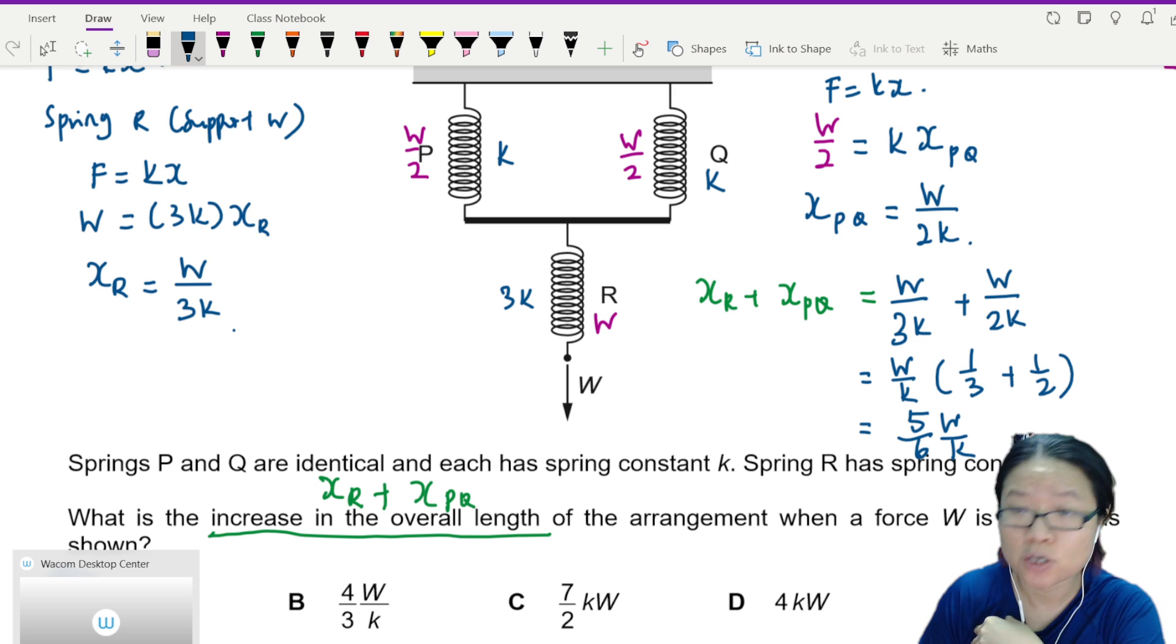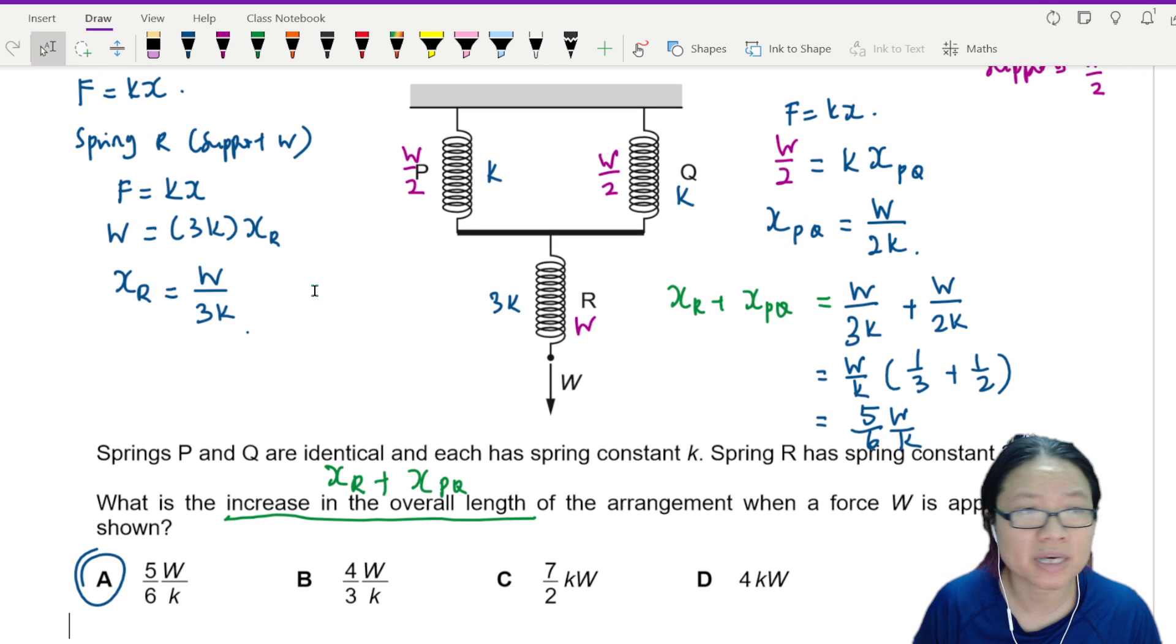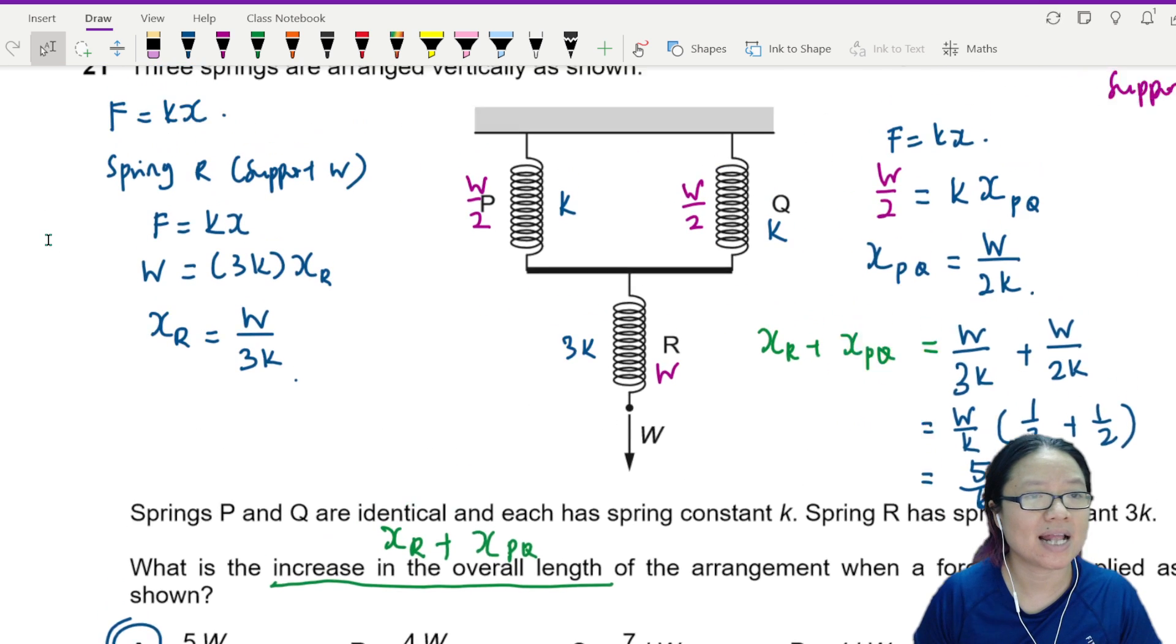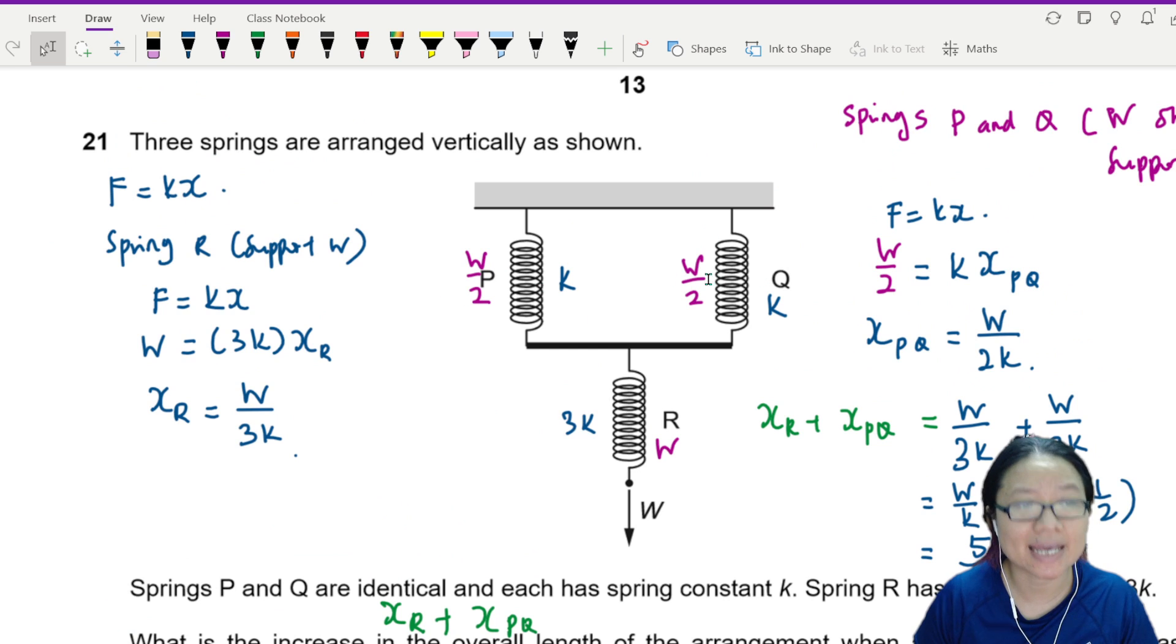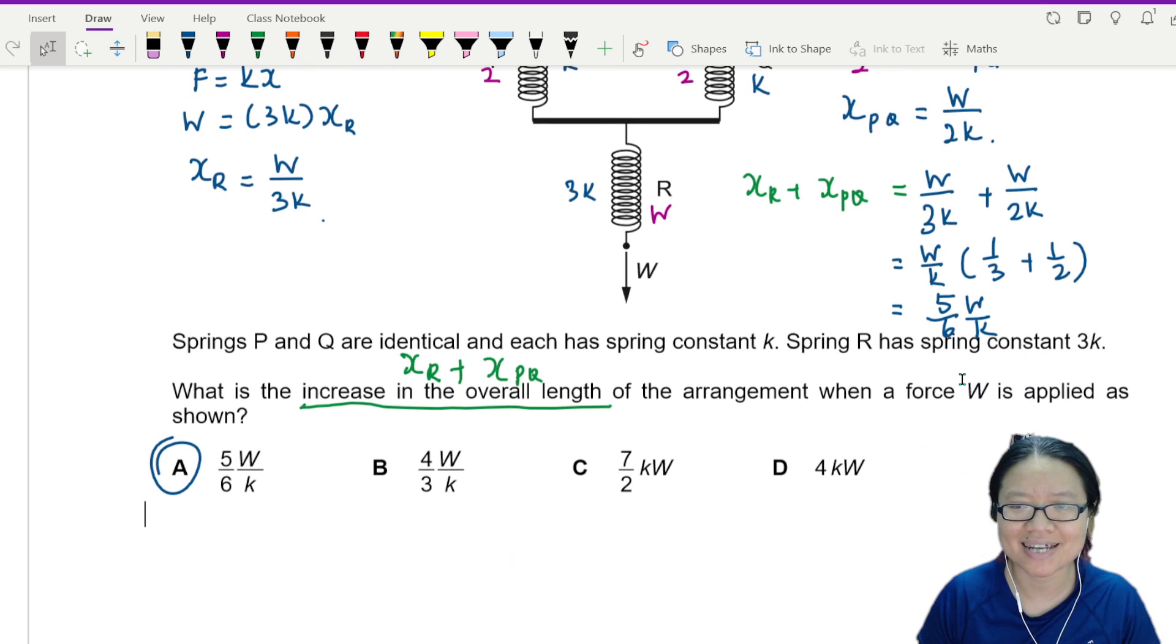Answer is A. So remember, whenever you have spring arrangements like this, what we're talking about is, if they are alone, they have to carry all the weight. If they are not alone, they share it equally if they have the same spring constant. Treat it layer by layer. F equal to KX for R and F equal to KX for these two. Then you total up the extension. Nice and easy. That's it for this question. Thank you.